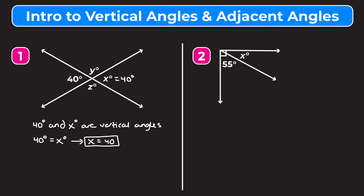Now we apply adjacent angles. Angle x is adjacent to angle y. We notice that x and y form a straight line, and a straight line always adds up to 180 degrees. So x plus y equals 180 degrees. Since x is 40 degrees, we have 40 plus y equals 180, and subtracting 40 from both sides gives us y equals 140 degrees.